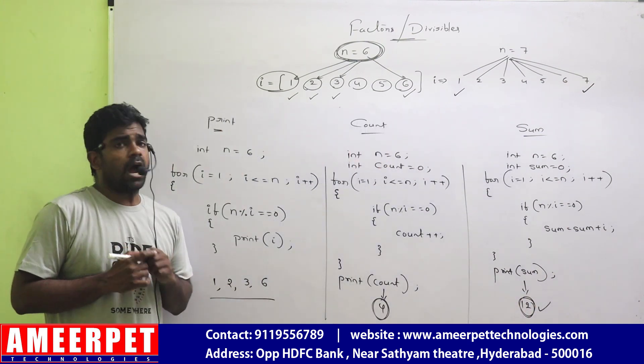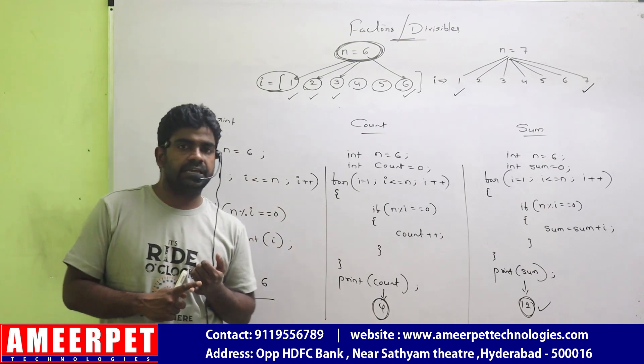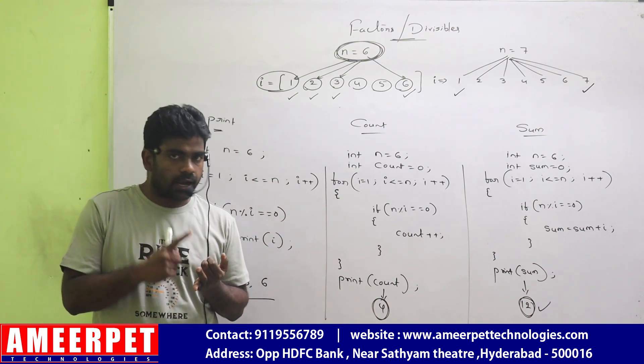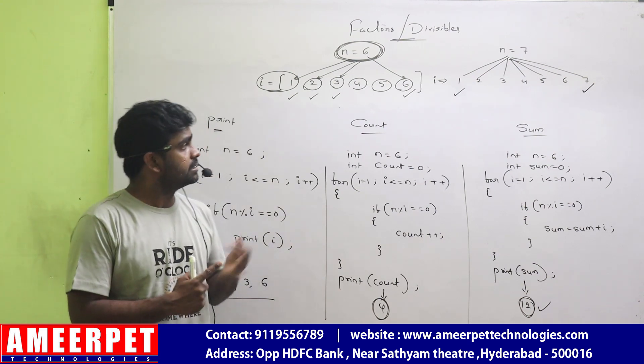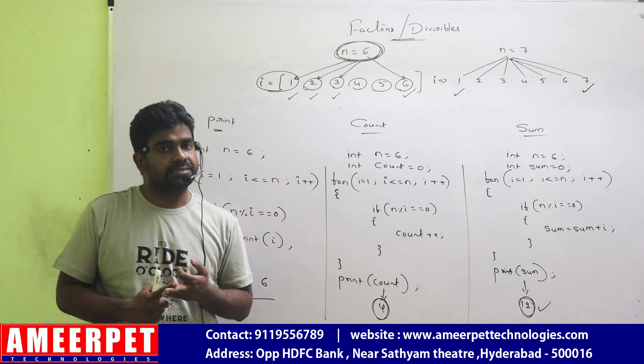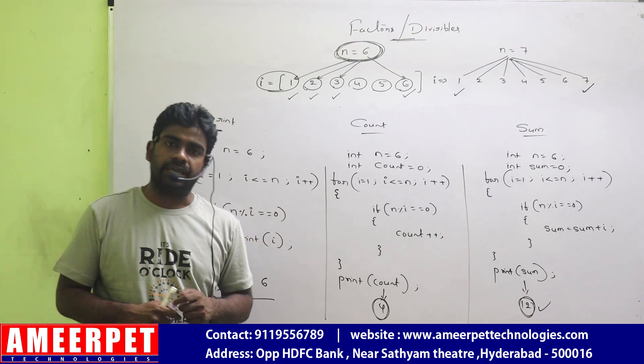So, this is how to print the factors for a given number, how to find the count of factors, and how to display the sum of factors. Hope you understood. Thank you all.